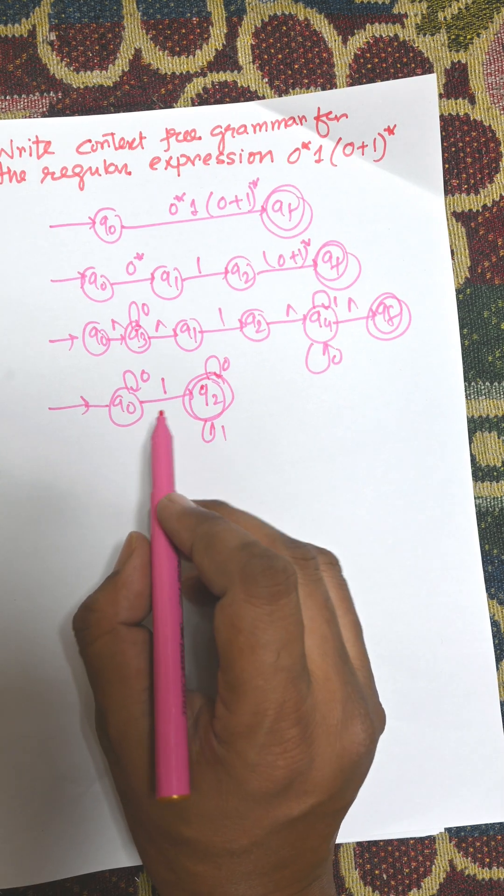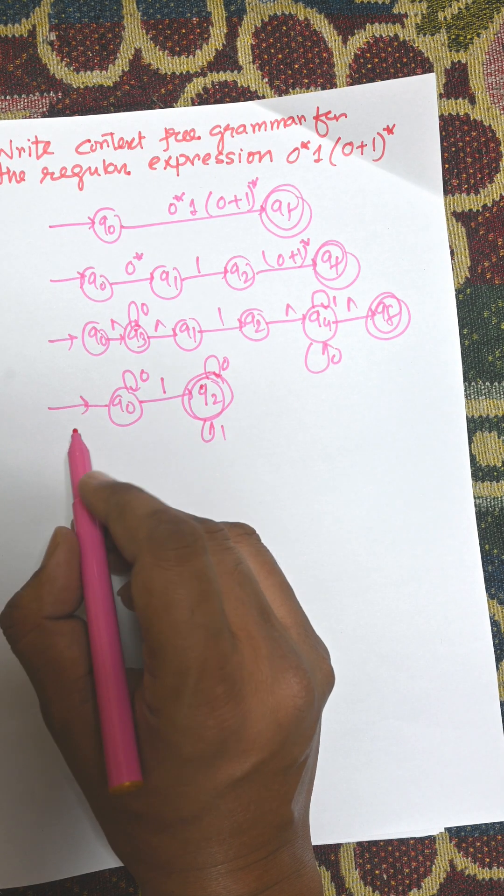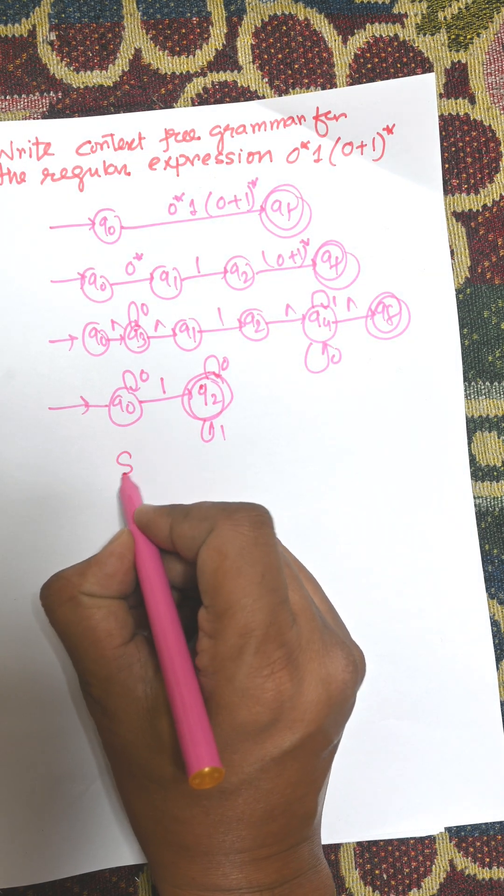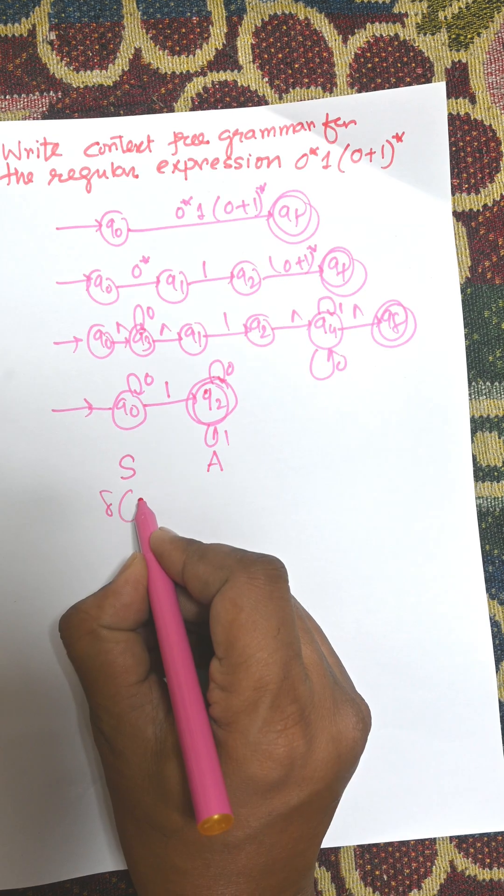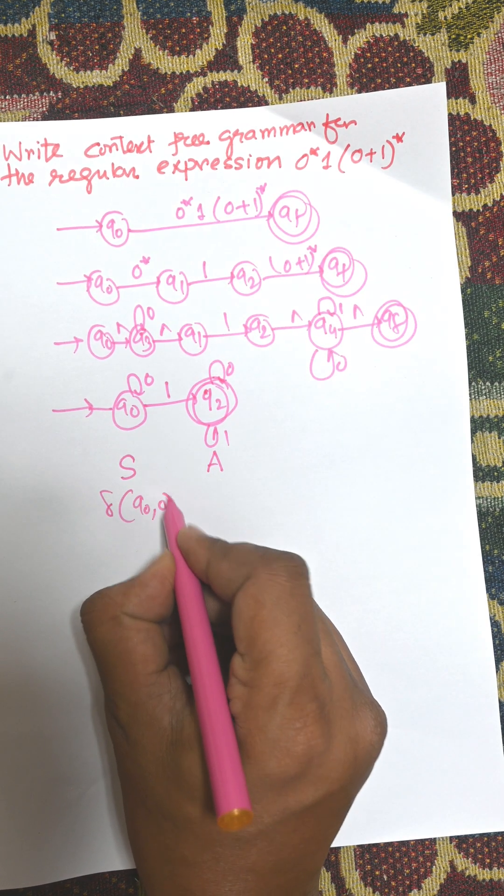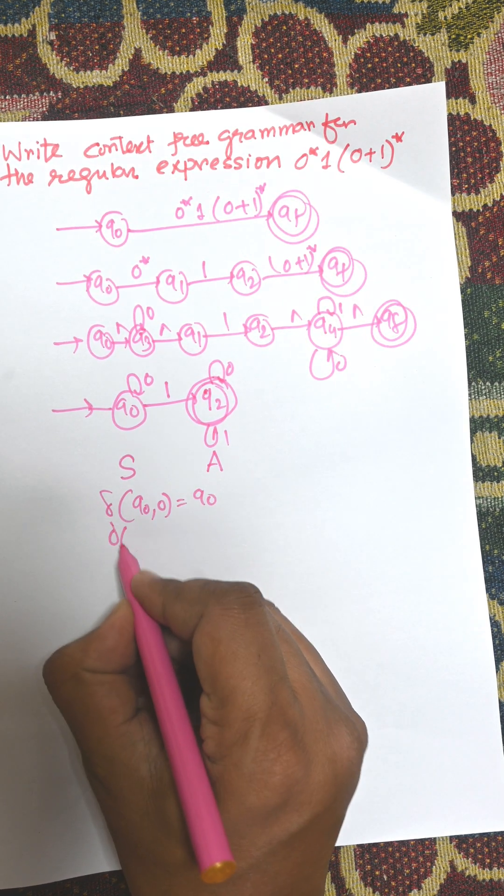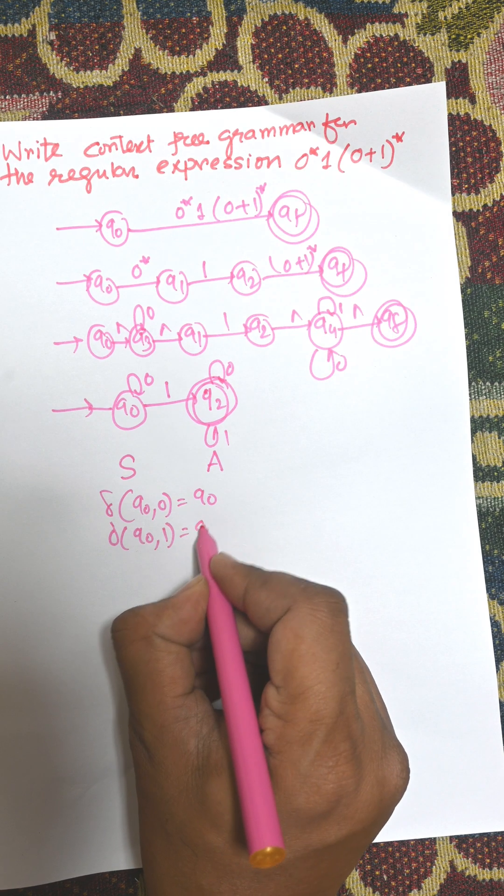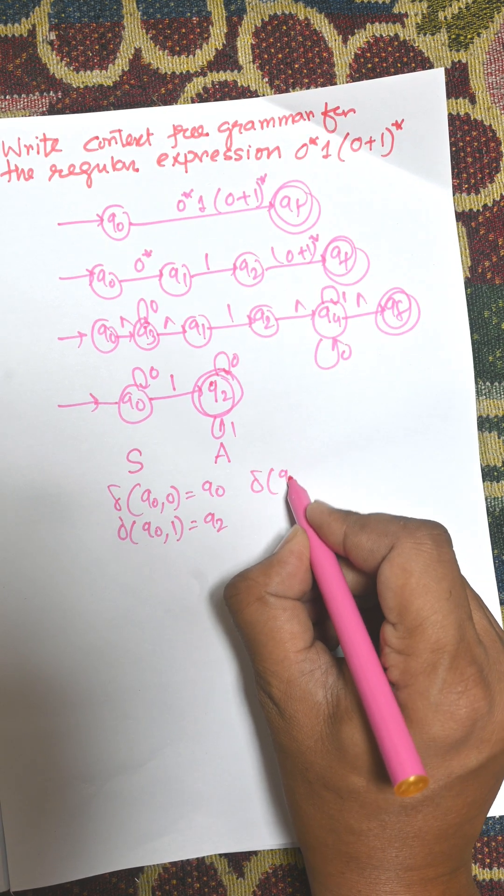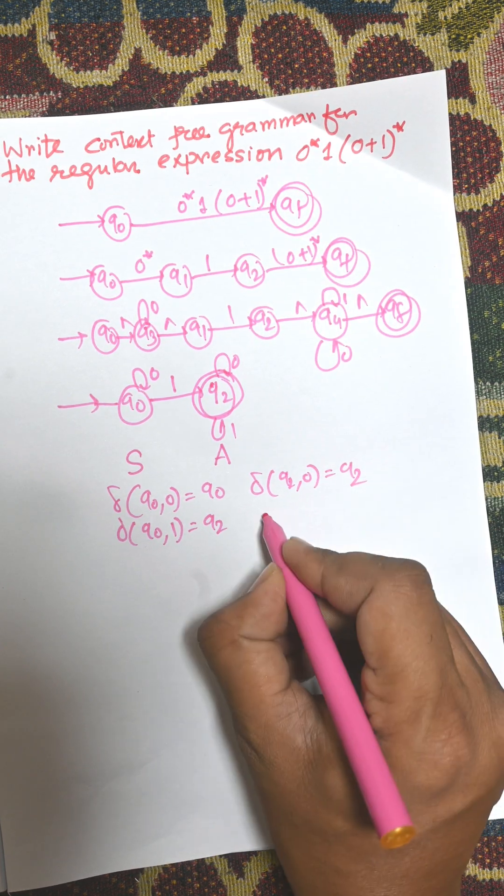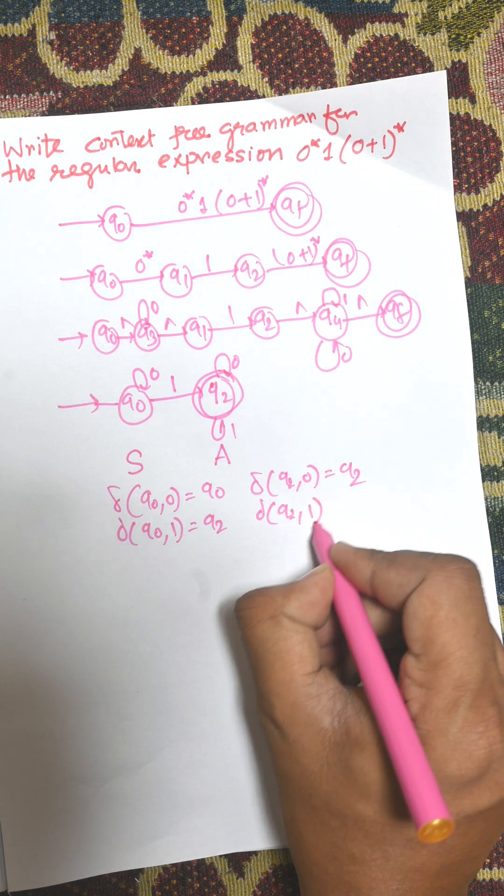Now we need to consider two states, one for Q0 and another for A. Q0 to 0 equals Q0, Q0 to 1 to Q2, Q2 to 0 to Q2, and Q2 to 1 to Q2.